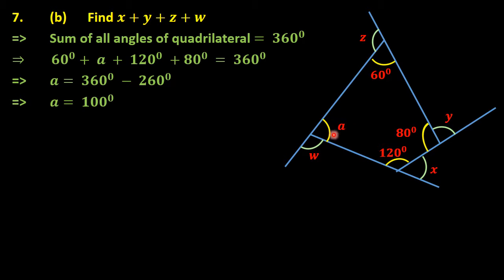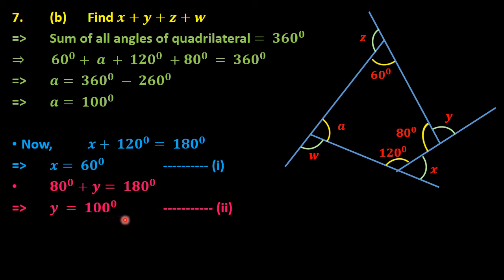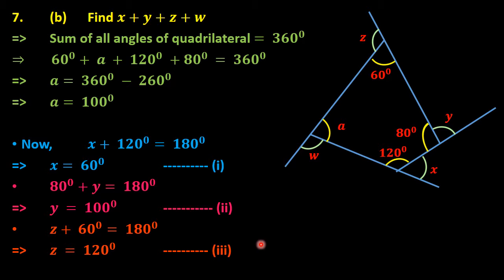Using the linear pair concept: x and 120 degrees are a linear pair, so x equals 60 degrees — equation one. Angle y and 80 degrees are a linear pair, so y equals 100 degrees — equation two. Angle z and 60 degrees are a linear pair, so z equals 120 degrees — equation three.